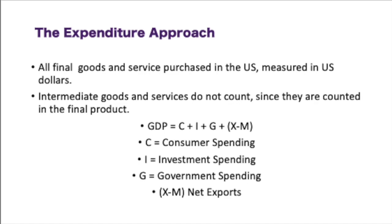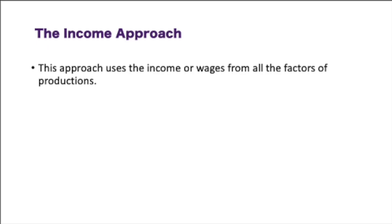In the United States, our M is always going to be a larger number than our X — we import quite a few more goods than we export. That depends on your particular country; maybe your country is importing more goods than exporting. The income approach uses the wages and income from all the factors of production — you add those all up, and that gives you the income approach.